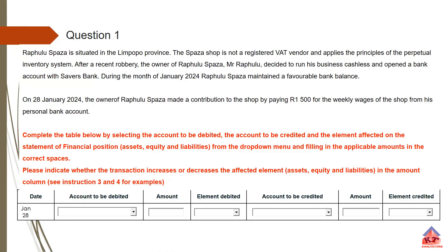This question reads as follows. Rapula Spaza is situated in the Limpombo province. The Spaza shop is not a registered vendor and applies the principles of the perpetual inventory system. Don't worry too much about whether you understand what a perpetual inventory system is. After a recent robbery, the owner of Rapula Spaza, Mr. Rapula, decided to run his business cashless and open a bank account with Savers Bank. During January 2024, Rapula Spaza maintained a favorable bank balance, meaning they had a positive bank account.